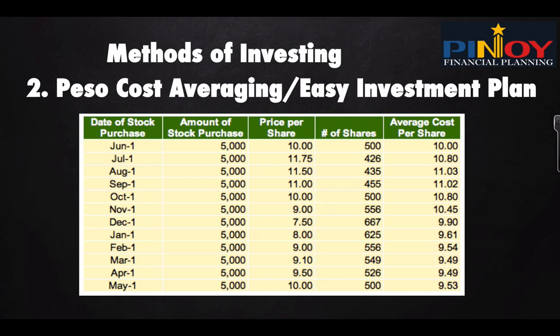For example, on June 1st: 5,000 divided by 10 pesos per share equals 500 shares — average cost is 10 pesos. On August 1st: 5,000 divided by 11.50 pesos per share equals 435 shares — your average cost goes up. When the price drops, say in May at 10 pesos, you get 500 shares again. From December to April when prices are lower, your average cost comes down. That's the concept of peso cost averaging — you don't have to time the market. You invest 5,000 every month and take advantage of the market's ups and downs.